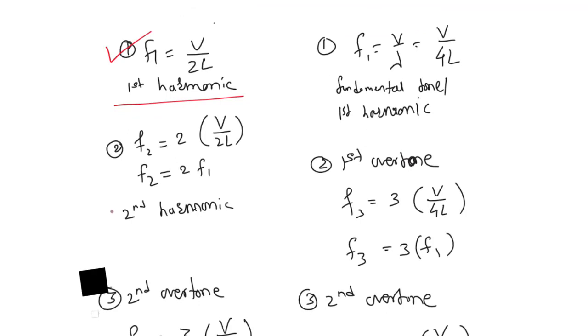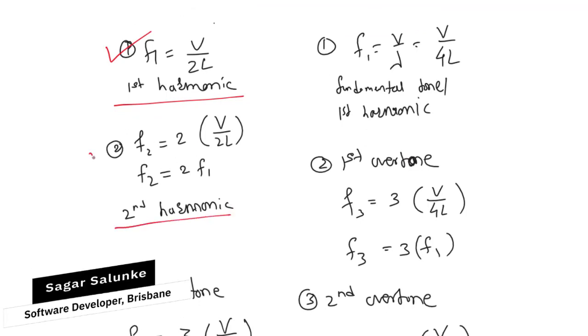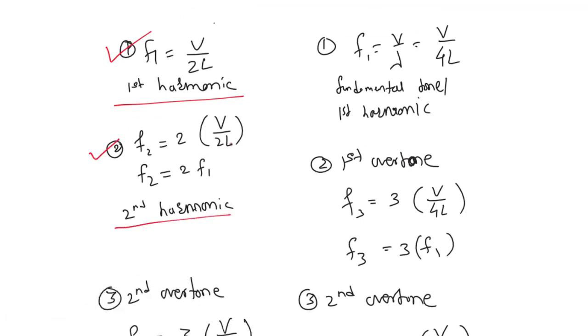The second harmonic, or first overtone, is f2 = 2(v/2L), which is f2 = 2f1.